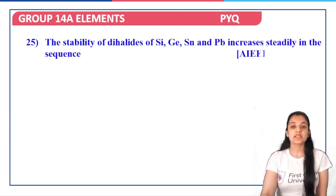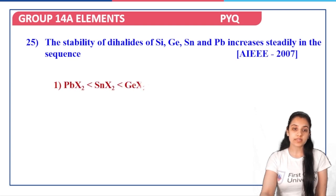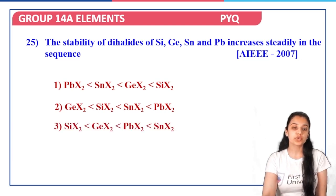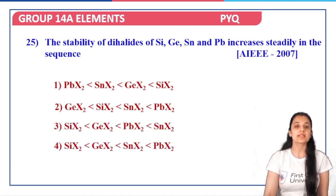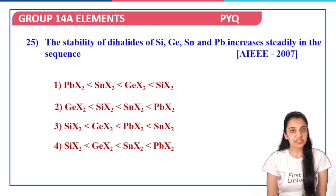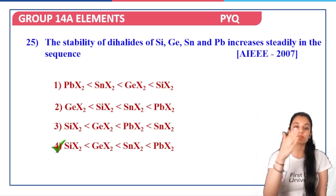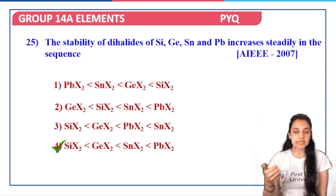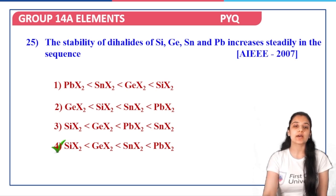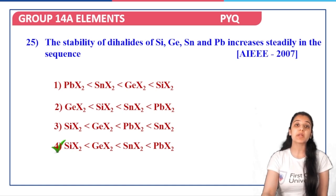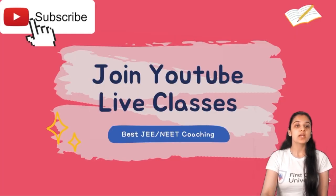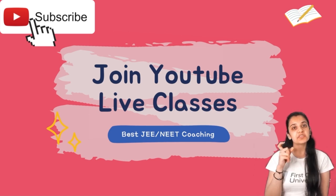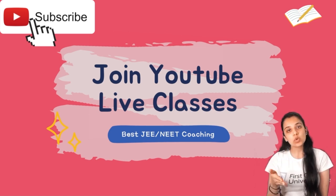Next: the stability of dihalides of silicon, germanium, tin, and lead — does it increase or decrease down the group? The correct answer is option four: from silicon to germanium to tin to lead, the stability of dihalides goes on increasing. Down the group, the +2 oxidation state becomes more stable, which we have discussed.